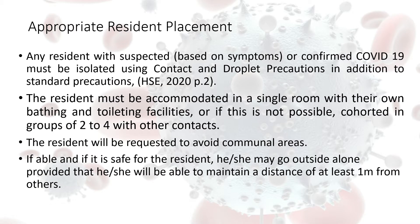The next precaution in infection prevention and control relates to appropriate resident placement. Any resident with suspected — based on symptoms — or confirmed COVID-19 must be isolated using both contact and droplet precautions in addition to standard precautions.